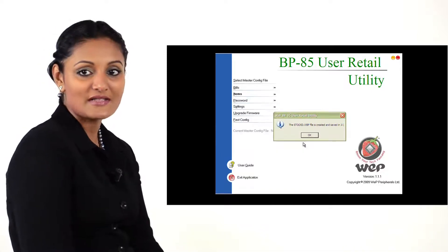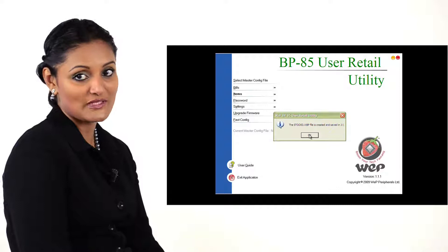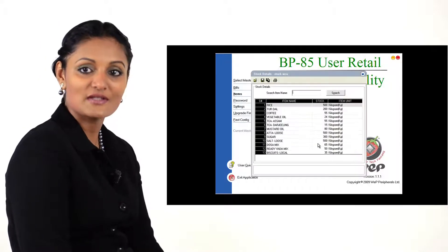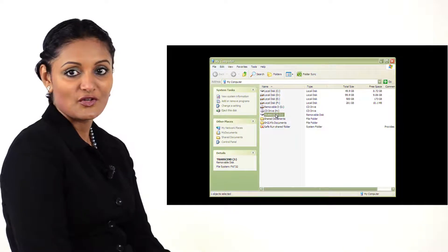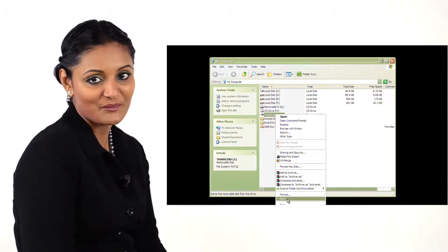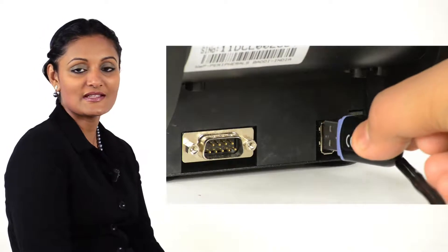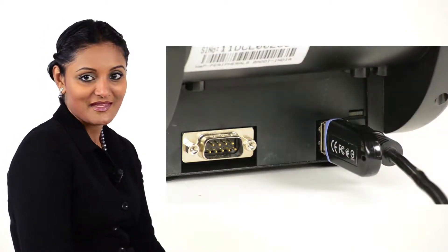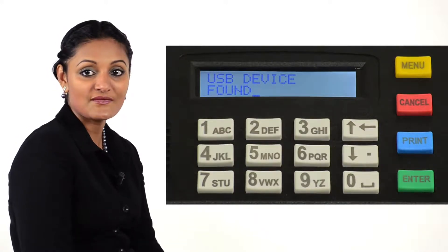Click OK again. A stock database file gets created in the USB drive. Click OK to continue and eject the drive through the normal Windows procedure. Insert it into the printer's USB port. The printer displays USB Device Found.